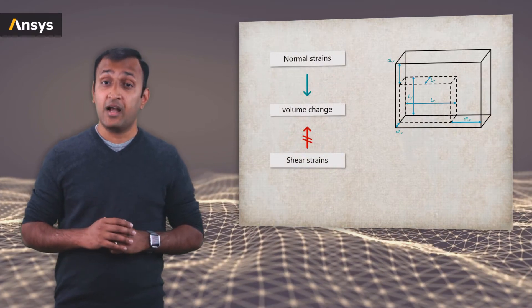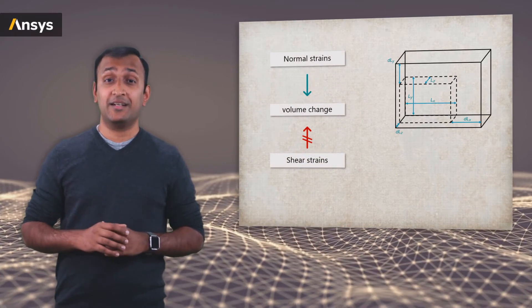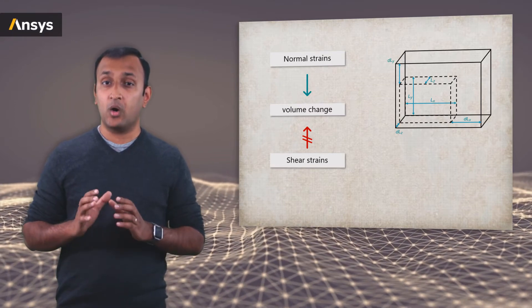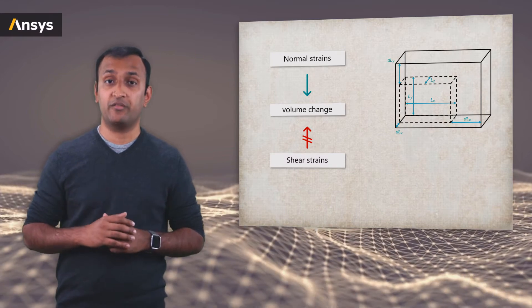Finally, another point worth noting is that the shear strains do not change the volume of the body. Only the normal strains result in a change in the volume of the body.